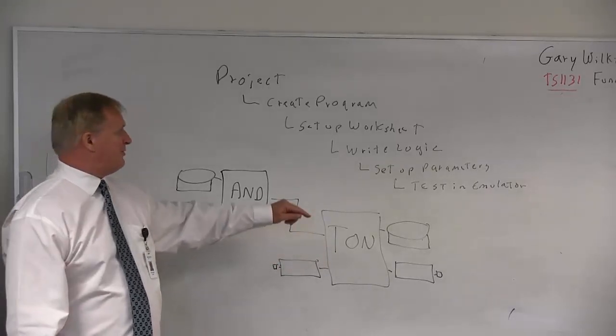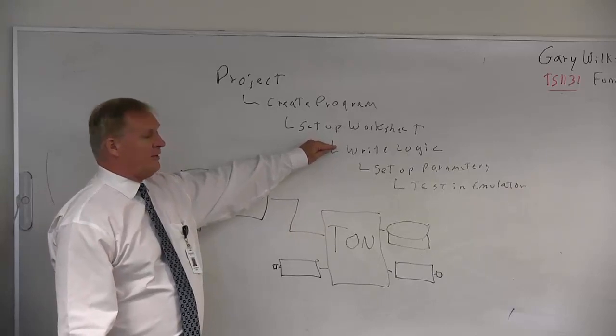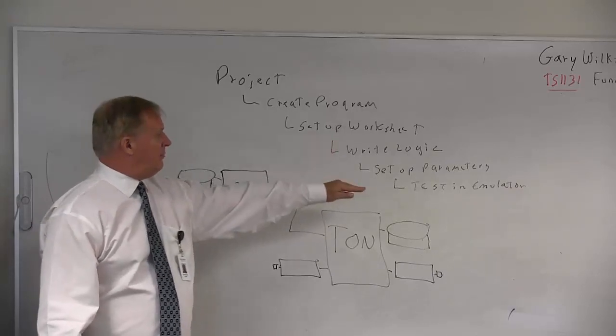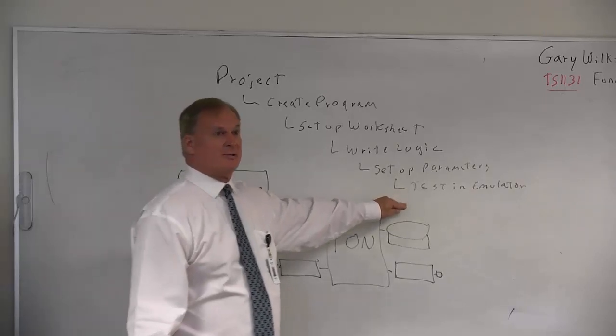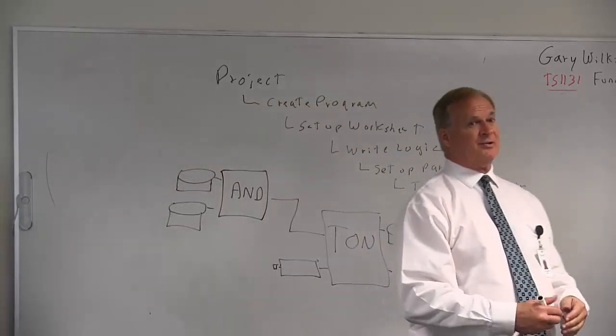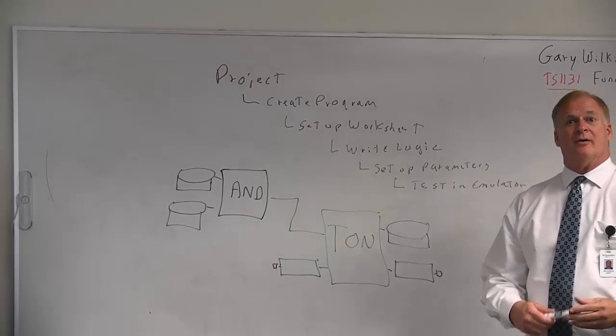So you're going to see the difference between the source code, which is what you write, and when you get to here, that's when you're testing the thing and forcing the points. The pretty colors are associated with Boolean variables. So get through that.